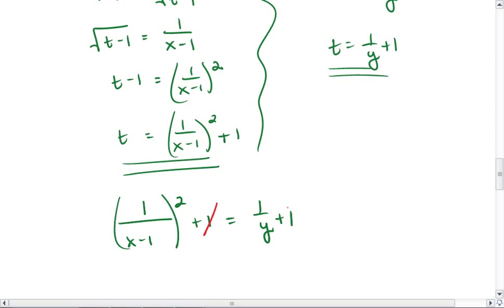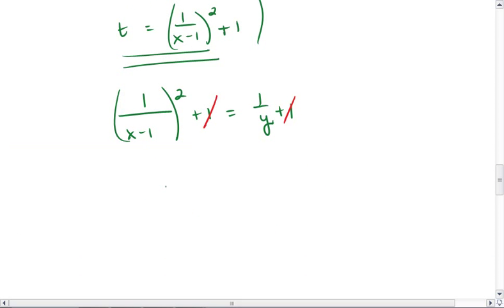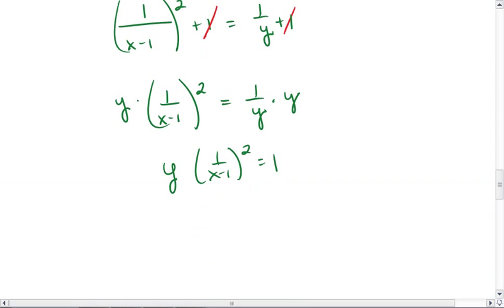So we're going to set the two equations equal to one another. I realize that I can subtract 1 from both sides, which gives me 1 over x minus 1 squared equals 1 over y. And I actually can take the reciprocals of both sides. So if I multiply both sides by y, I get y times 1 over x minus 1 squared equals 1, and then I can multiply both sides by x minus 1 over 1 squared, which gives me y equals x minus 1 squared.